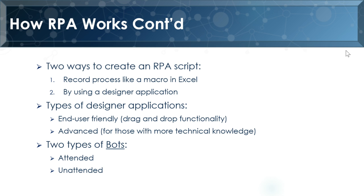There are two types of bots: attended and unattended. Unattended runs automatically with no human intervention. Attended bots will stop, pause, and ask a human for some feedback, then continue with the rest of the script. There's a time and place for both, depending on the application. If a bot is heavily attended, maybe RPA is not the best option for that process.